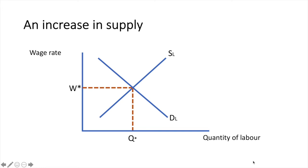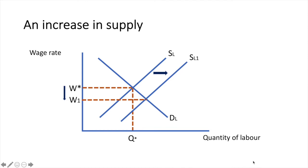Suppose this diagram represents the market for factory workers. If there is large-scale migration of unskilled workers to a country, then this would increase the supply of labour across many industries, particularly manufacturing. This would lead to an increase in the supply of labour from SL to SL1 and cause the equilibrium wage rate to fall from W star to W1 and equilibrium quantity of labour to rise from Q star to Q1.